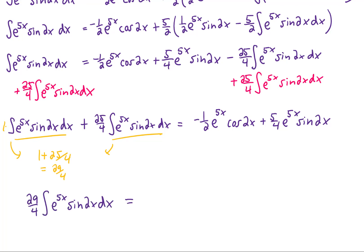So what we're left with is that 29 fourths times this original integral is all of this mess that we got over here on the right-hand side of the equation. Now, the whole goal of this problem in the first place was to find this integral right here. We're now in a position where we can get that integral by itself simply by dividing both sides of this equation by 29 fourths.